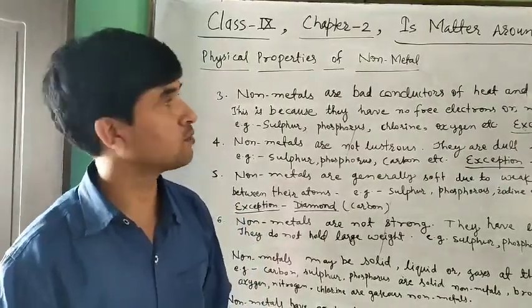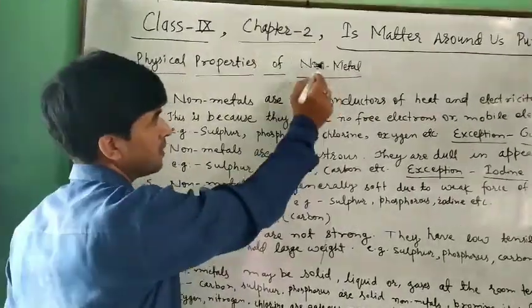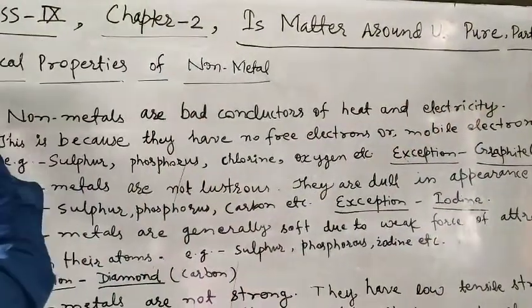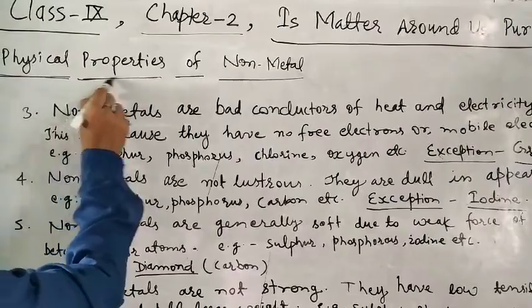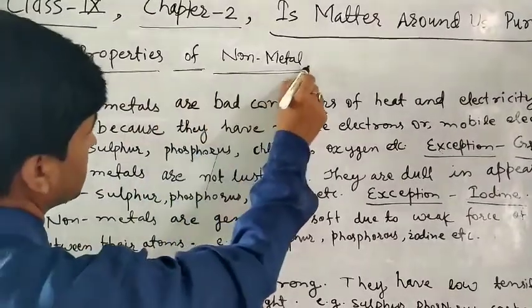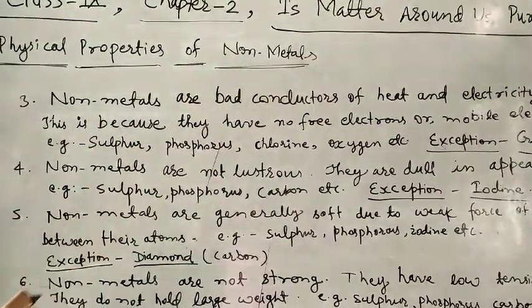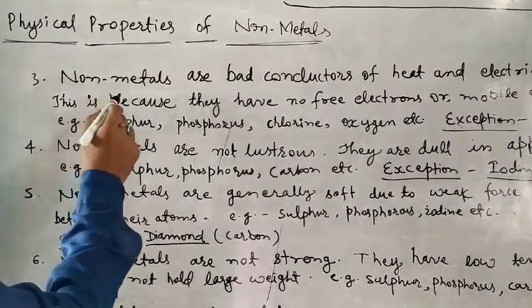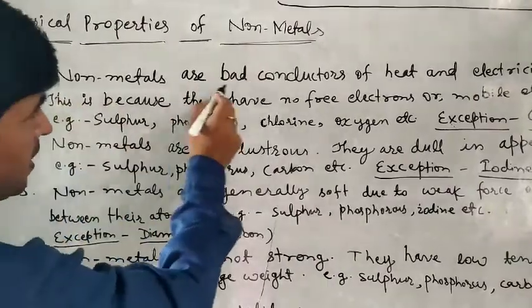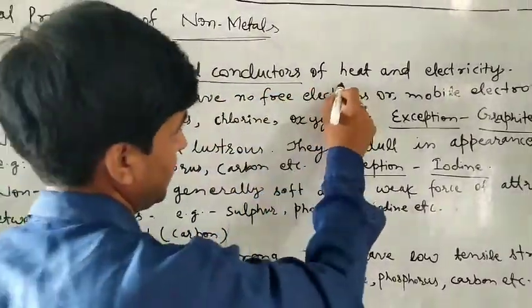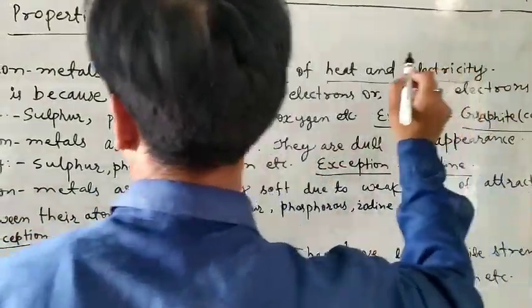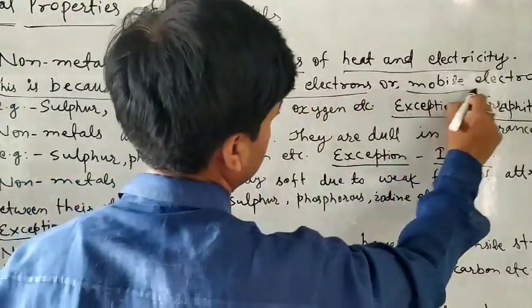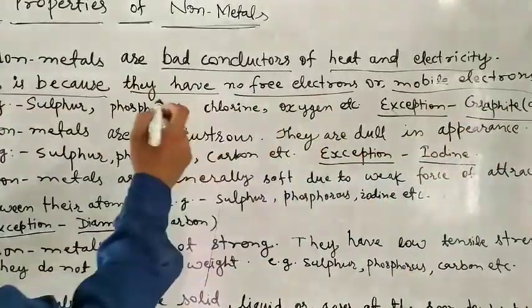Welcome students. Today we are looking at the physical properties of non-metals. First, non-metals are bad conductors of heat and electricity. This is because they have no free electrons or mobile electrons, so they are bad conductors.